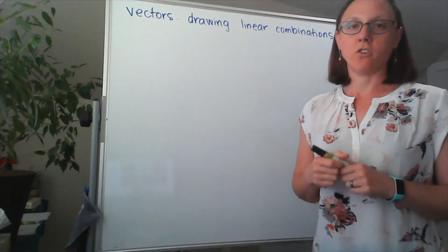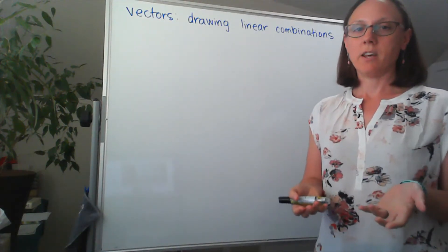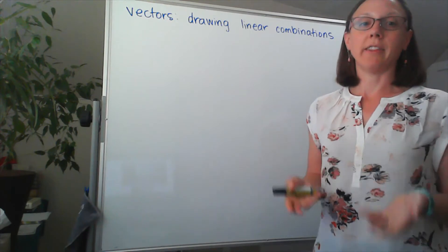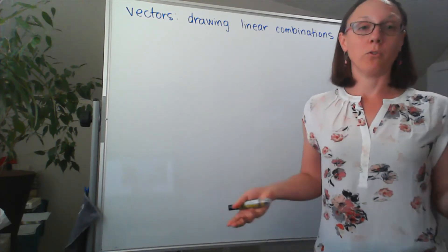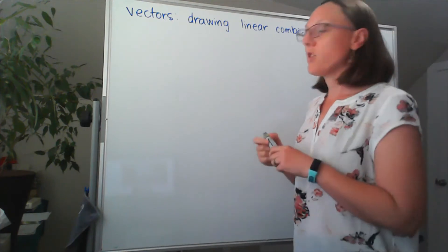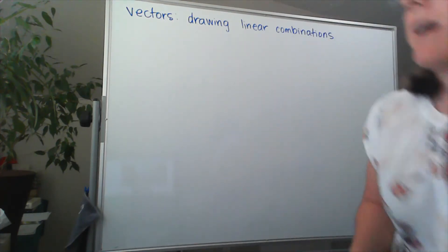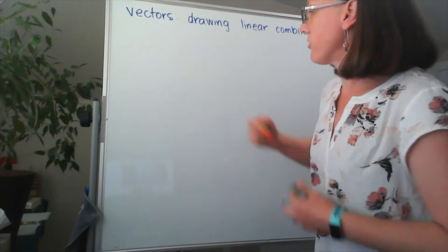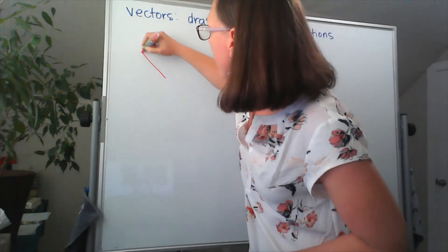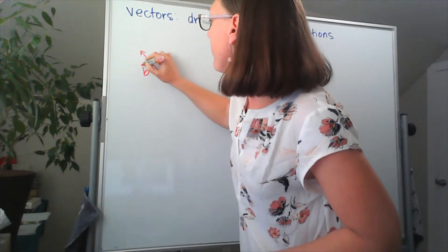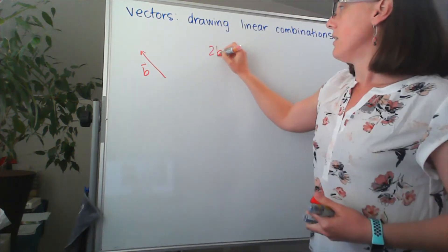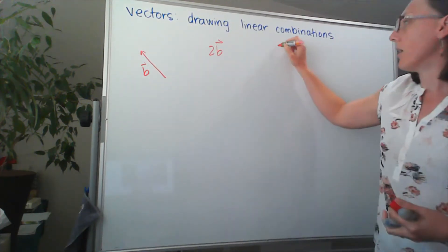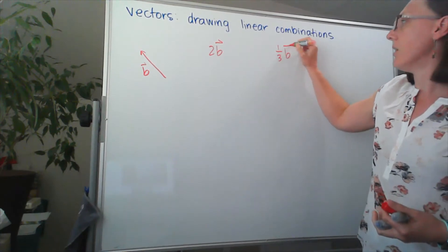One of the things that we might be asked to do when we're sketching vectors is to draw linear combinations of those vectors, or even scalar multiples of a vector. So let's think about the situation where I've got a vector B, and then maybe I'm going to be asked to sketch 2B or one third of B.